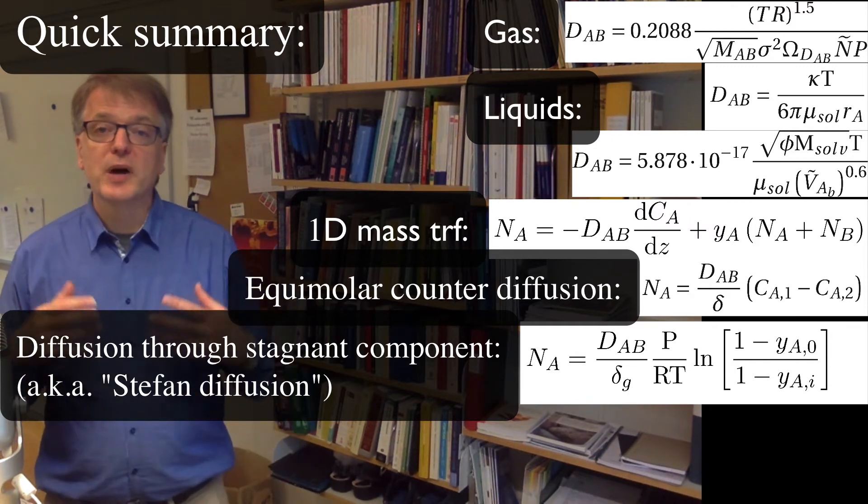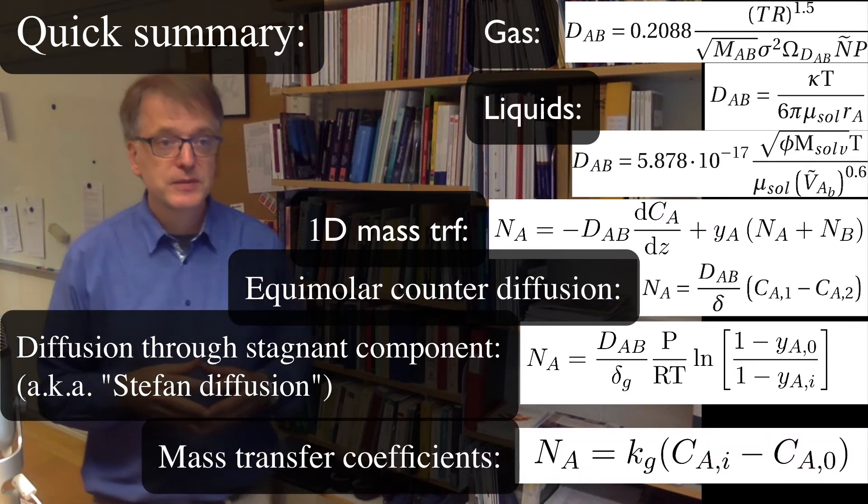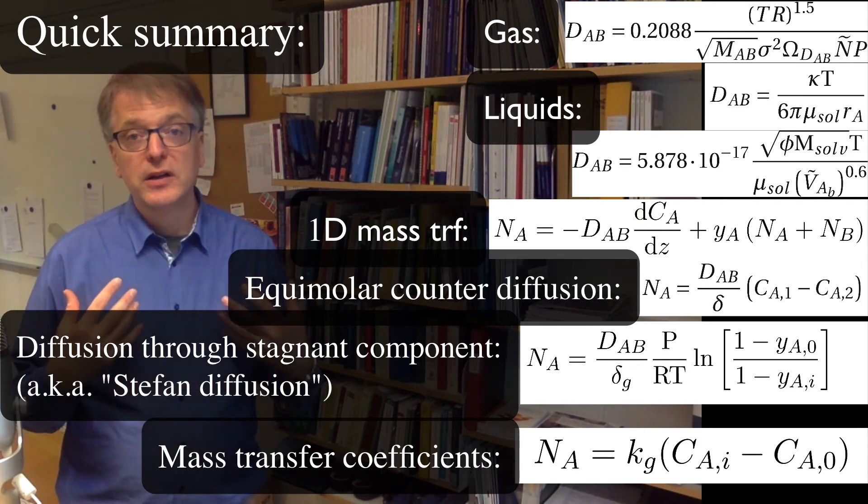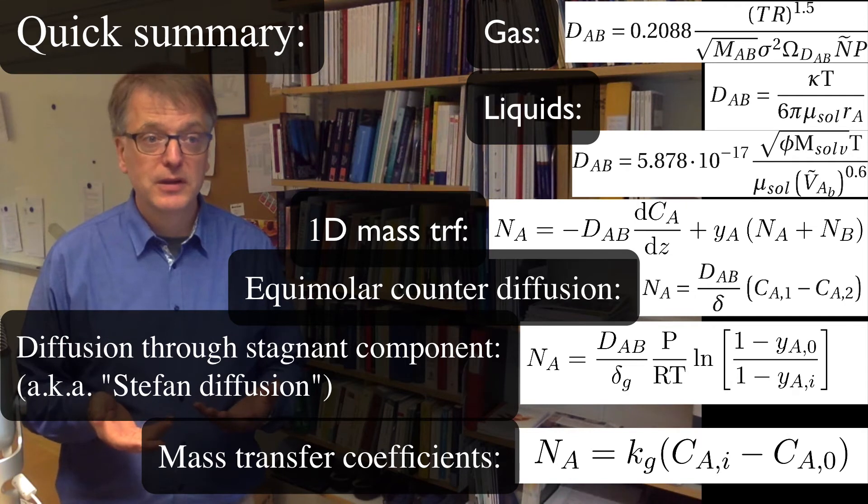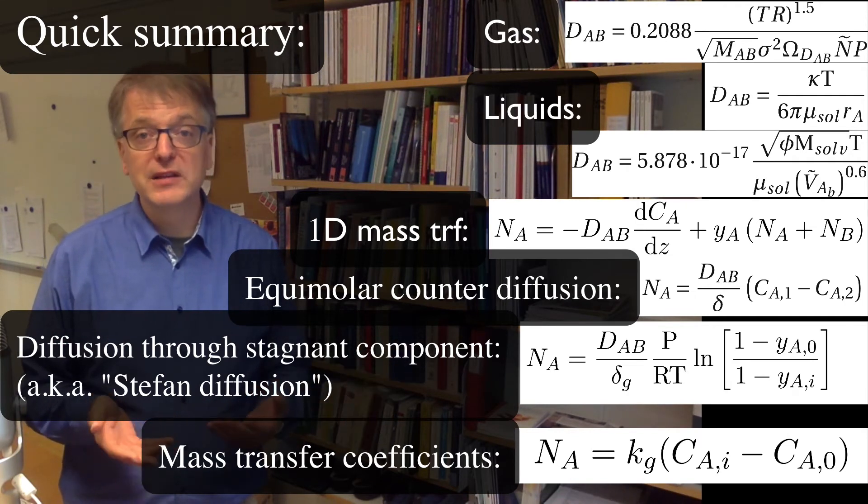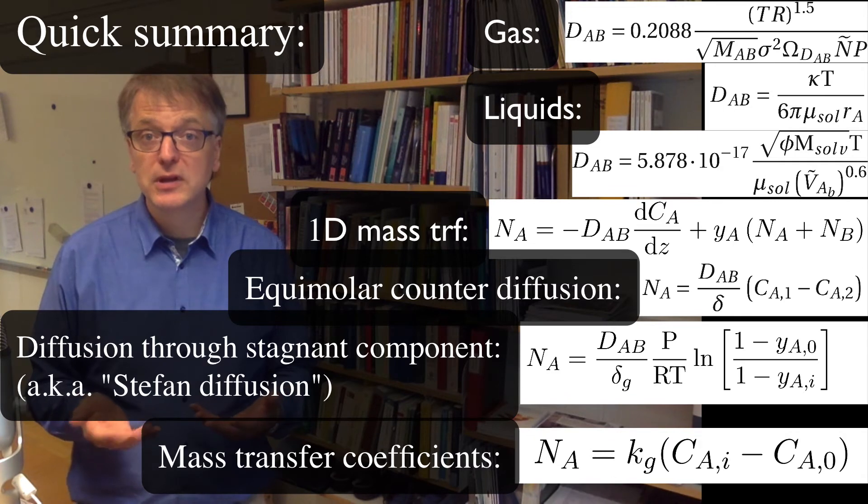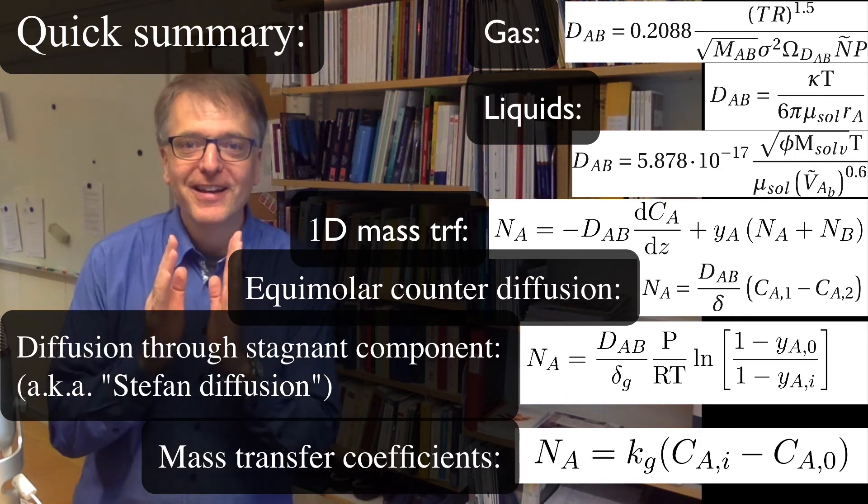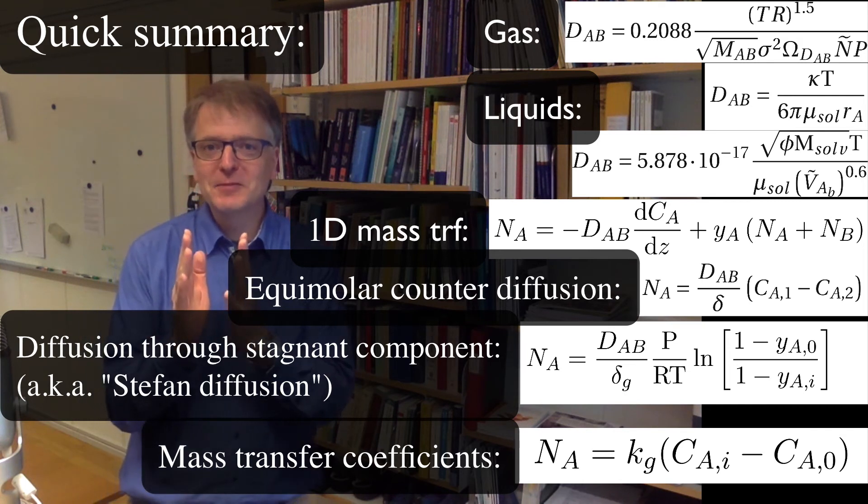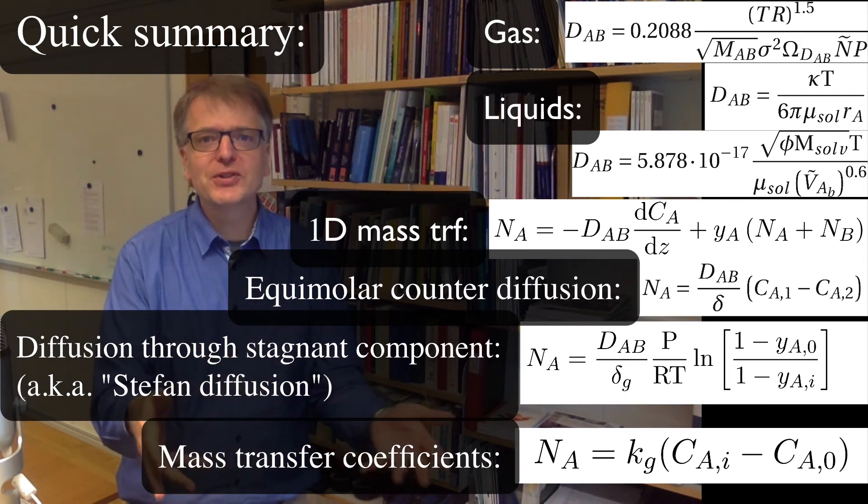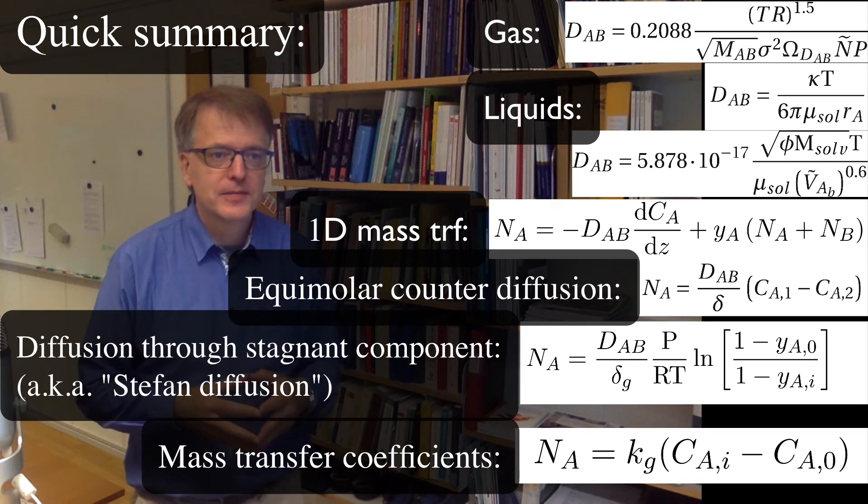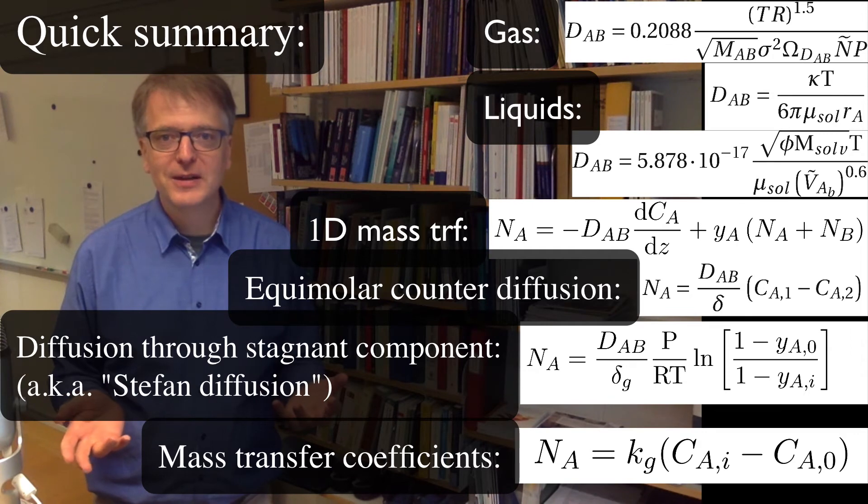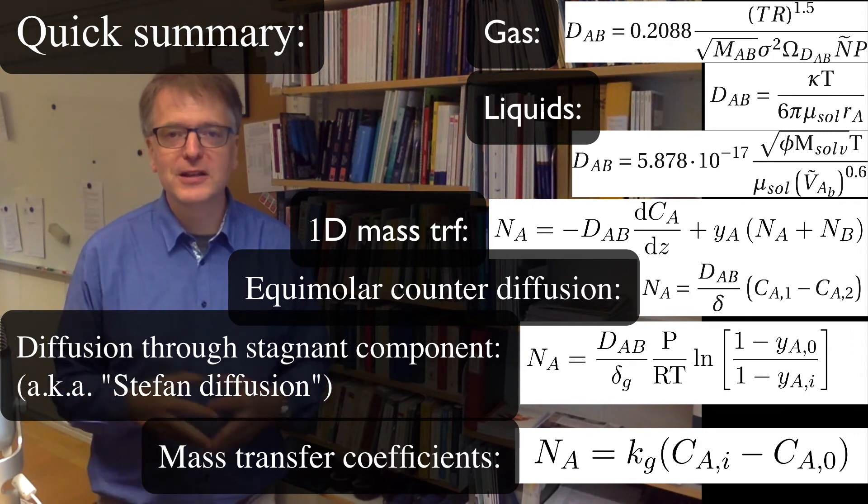And then we talked about mass transfer coefficients and that's an engineering approach to situations where the film thickness might be not well defined or it might be actually unmeasurable. It might actually be so that it's well defined perhaps but we have no way of getting to measuring it. And we can also use it in situations where the theories we have don't explain things much.